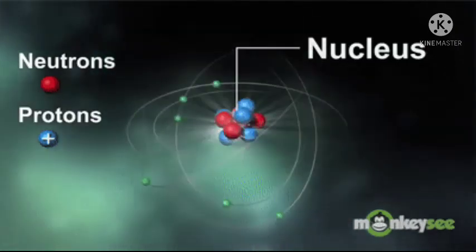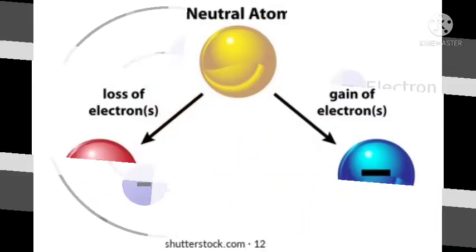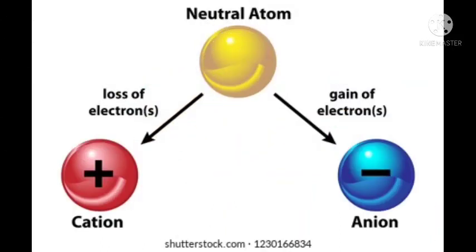An atom can lose, gain or share electrons. When an atom loses its electrons, then the number of protons in it becomes more than the number of electrons, so the atom becomes positively charged. Whereas, when the atom gains electrons, the number of electrons in it becomes more than the number of protons. Hence, the atom becomes negatively charged.